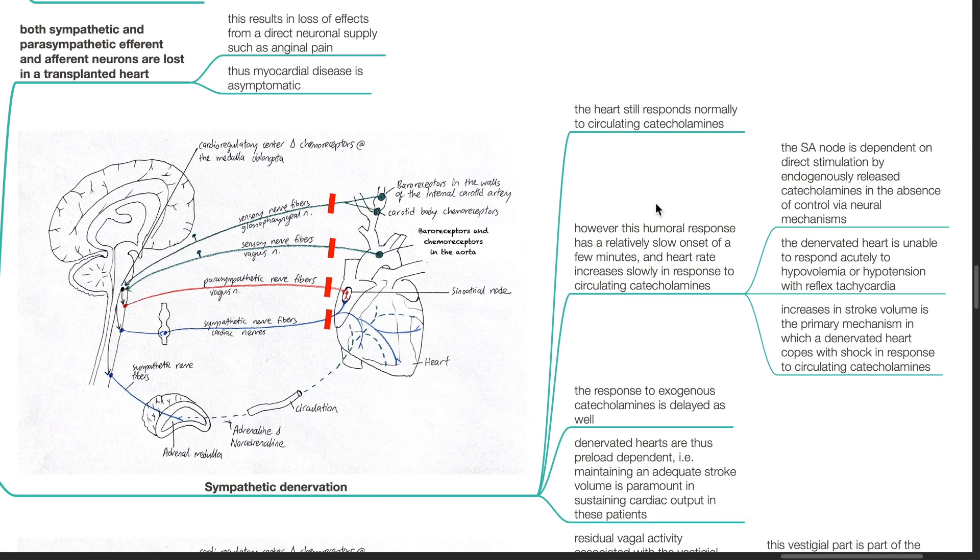Sympathetic denervation. The heart still responds normally to circulating catecholamines. However, this humoral response has a relatively slow onset of a few minutes and heart rate increases slowly in response to circulating catecholamines. The SA node is dependent on direct stimulation by endogenously released catecholamines in the absence of control via neural mechanisms.